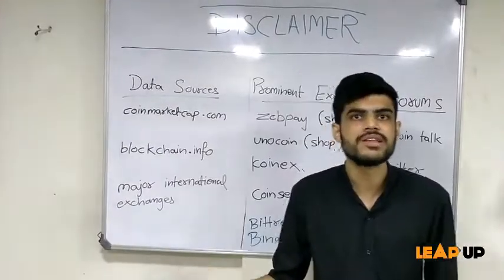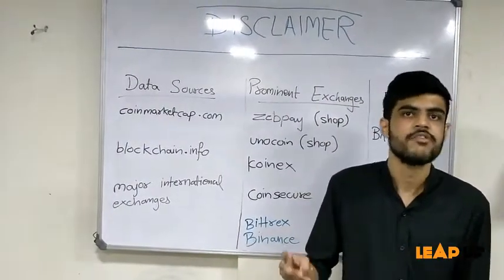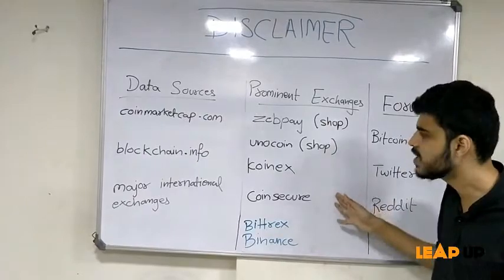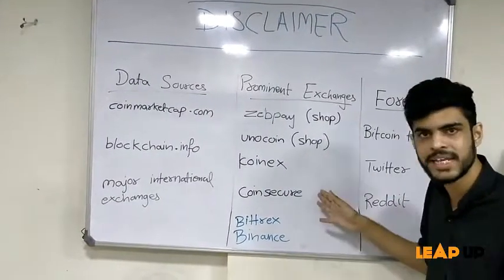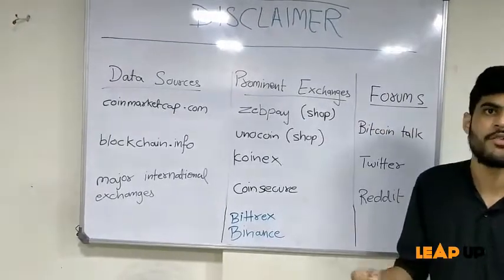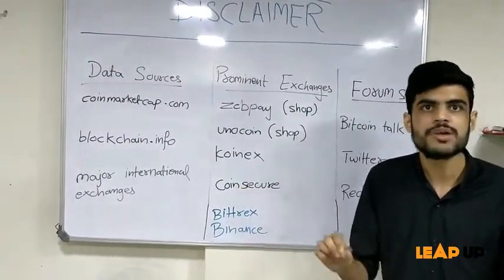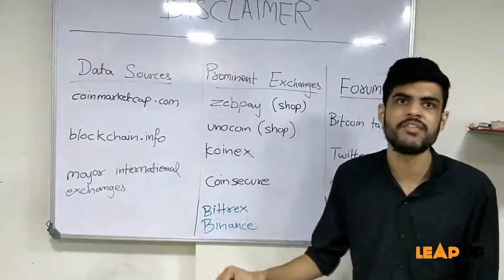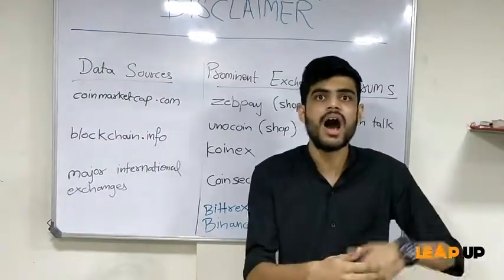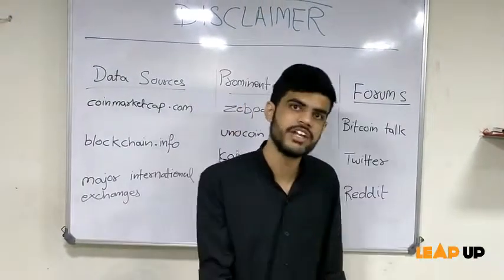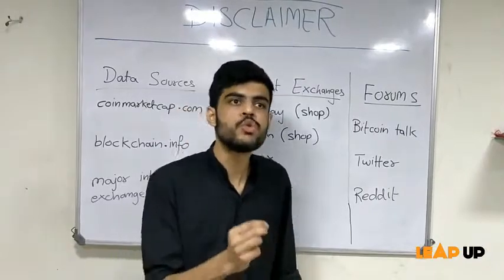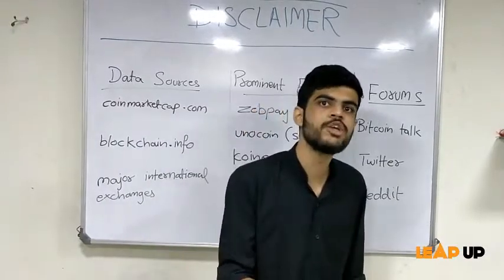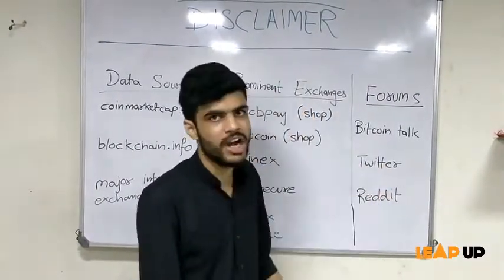You also have to store your currencies somewhere, and there are three kinds of wallets. First, all exchanges provide their own wallets, so you can store cryptocurrencies on the exchange itself online. Second, there are private wallets on your desktop — these are offline, and you simply need a private key, so anyone without access to your PC and private key can't access your cryptocurrencies. Third is a higher level of security called a hardware wallet, similar to a hard disk, where you can store your cryptocurrencies so that even if your computer crashes, you can recover them through the hardware wallet.